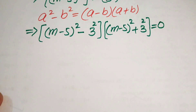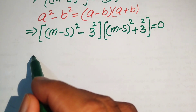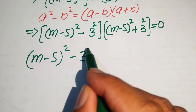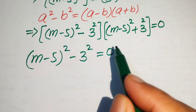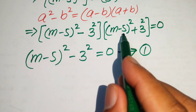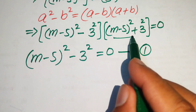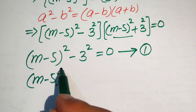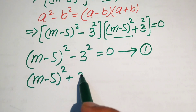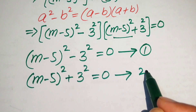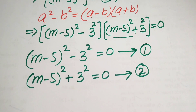We split this into two cases. Equation 1: (m minus 5)² minus 3² equals 0. Equation 2: (m minus 5)² plus 3² equals 0.